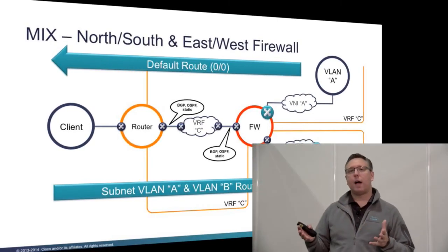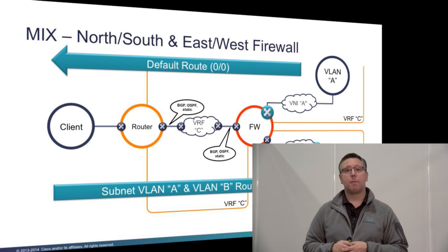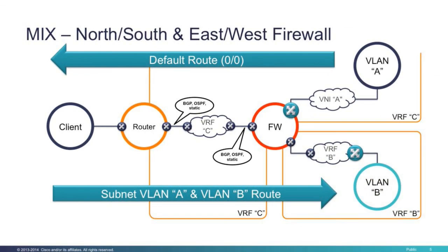We can have a tenant edge firewall and also add an east-west firewall between respective subnets, or mix firewall operation across east-west and north-south traffic. For example, the firewall can be the default gateway for VLAN A in an east-west approach while VLAN B uses the tenant edge approach with a known VRF hitting the firewall in a transit routed way. There are many permutations possible in a VXLAN EVPN fabric, using the default gateway either on the firewall or the distributed anycast gateway.